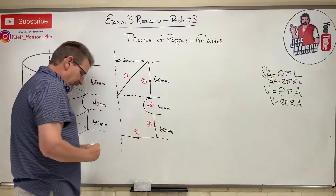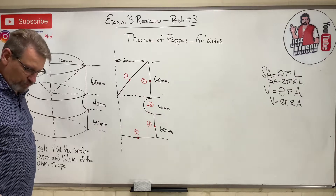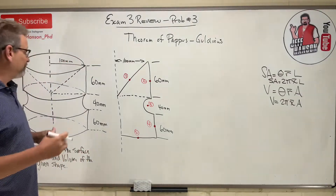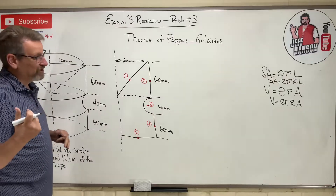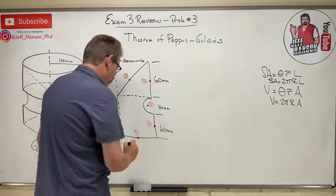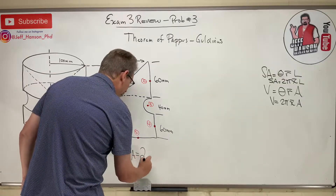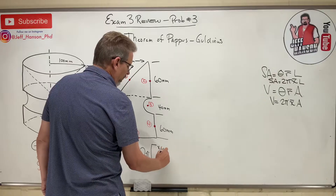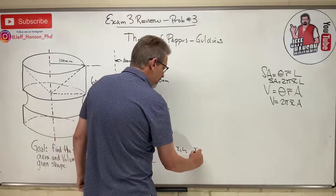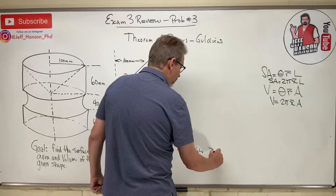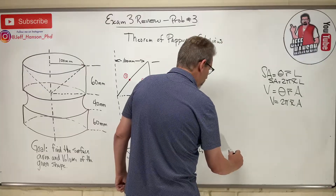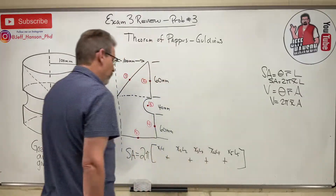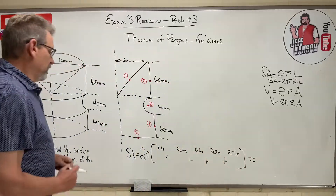Label these pieces: number one, two, three, four, five. If you want partial credit, tell the grader what you're doing. Surface area equals 2π, and factoring everything out: x₁L₁ + x₂L₂ + x₃L₃ + x₄L₄ + x₅L₅. I need to add all those bits together to get the total surface area.